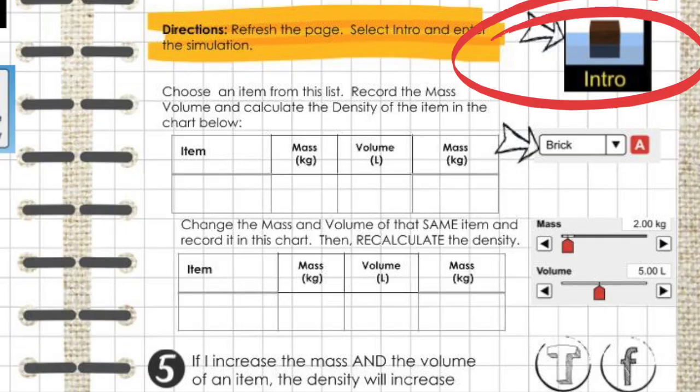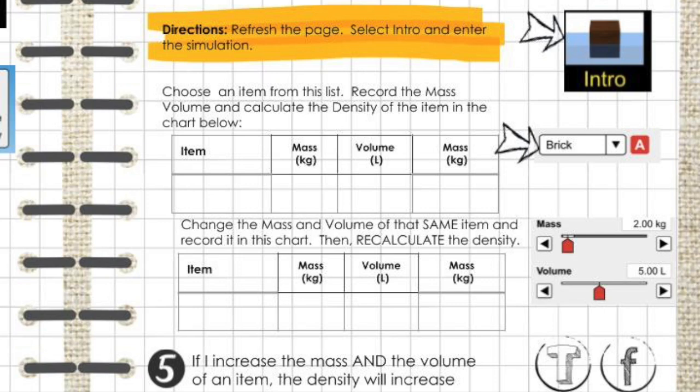The final section we're going to explore is also in the intro section on the simulator. Choose any item you want from the item list. For my example, I'm going to use the brick. Type the name of your item here and here.